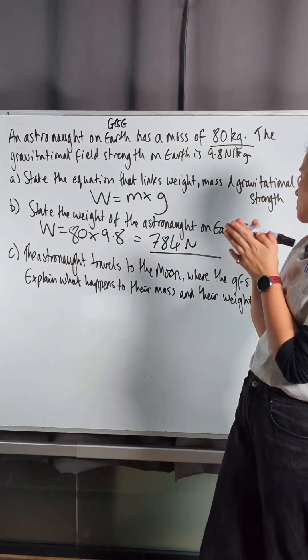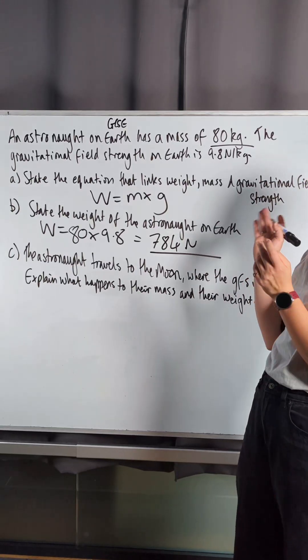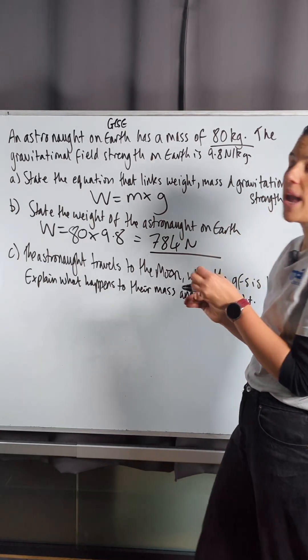Finally, the astronaut travels to the moon where the gravitational field strength is 1.6 newtons per kilogram. We need to explain what happens to their mass and to their weight.